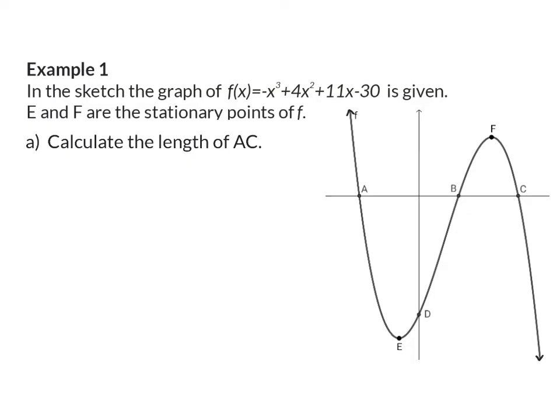In the sketch the graph of F is given. E and F are the stationary points of F. Let's see what is already indicated on the picture. E and F are the stationary points of F, so you can remind yourself that a stationary point is determined by taking the derivative and putting it equal to zero.